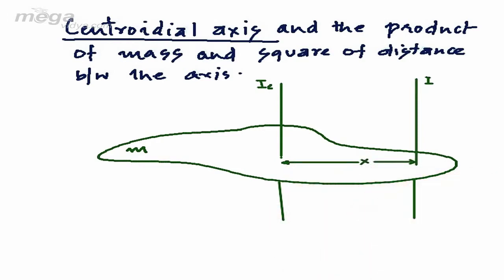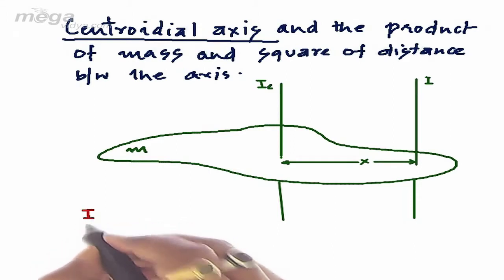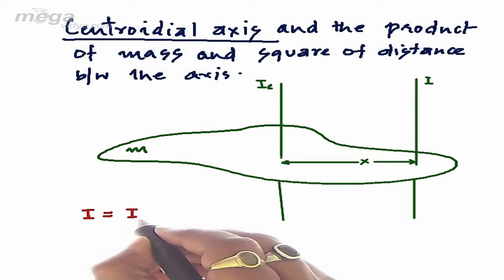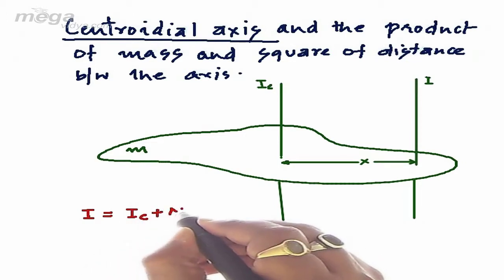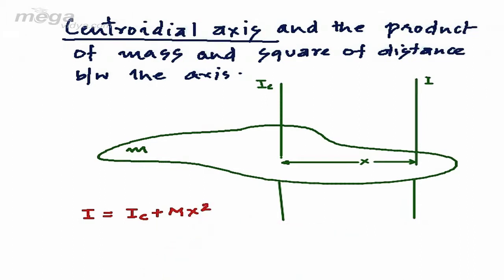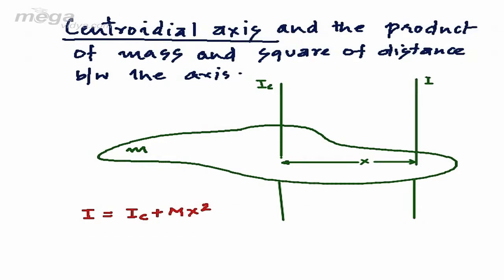According to the parallel axis theorem, the moment of inertia along the given axis I will be equal to the moment of inertia of the centroidal axis Ic plus the mass of the body times the square of distance between the axes, that is X squared. So I = Ic + Mx².